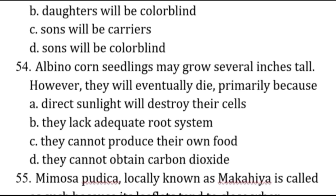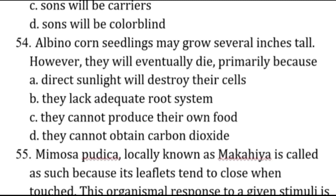Albino corn seedlings may grow several inches tall but will eventually die primarily because they lack chloroplast or chlorophyll — the site of photosynthesis — and cannot produce their own food. This also applies to variegated plants: the albino or fully variegated parts die because they have no chloroplast and cannot make food. That's letter C.